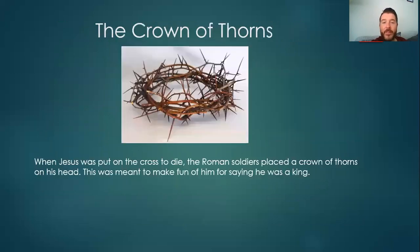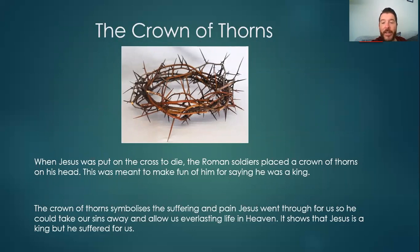Next, we've got the crown of thorns. When Jesus was put on the cross to die, the Roman soldiers placed a crown of thorns on his head. This was meant to make fun of him for saying he was a king. The crown of thorns symbolizes the suffering and pain Jesus went through for us so he could take away our sins and allow us everlasting life in heaven. It shows that Jesus is a king, but a king that has suffered for us. Because that crown of thorns would have dug into his skin and been very, very sore — it shows that he suffered for us. He didn't take the easy way — he had to go through a lot of pain and suffering to help us.